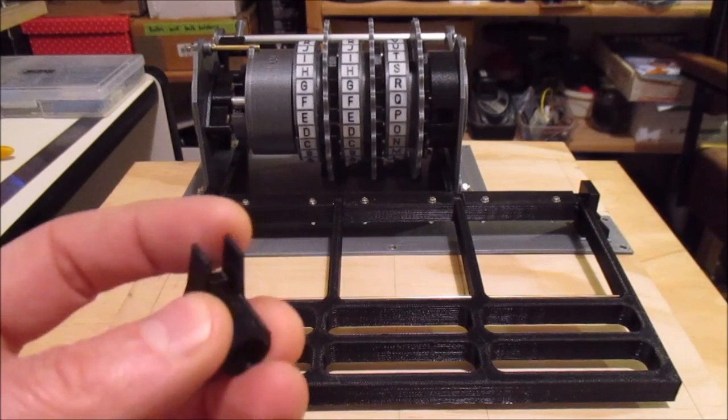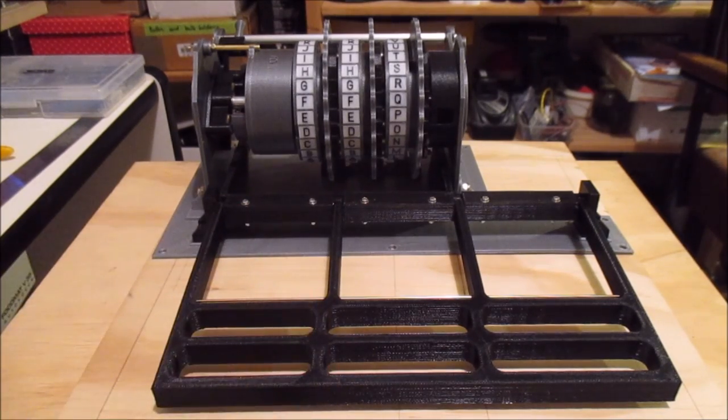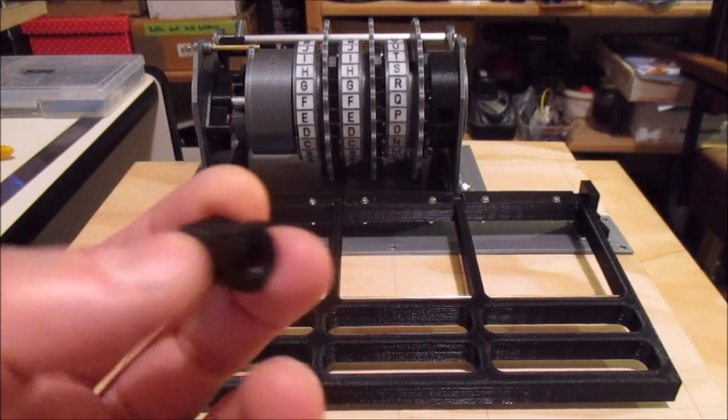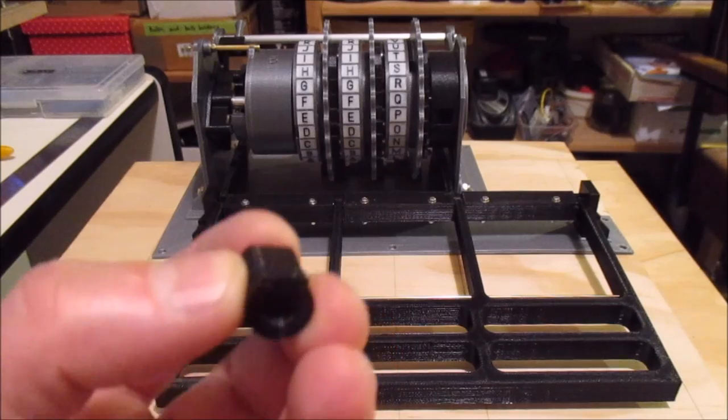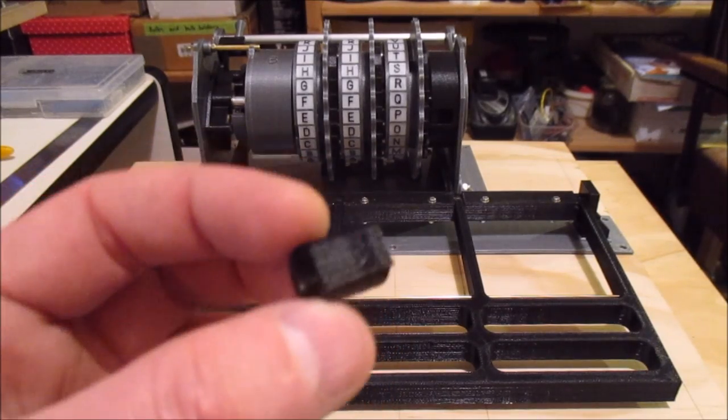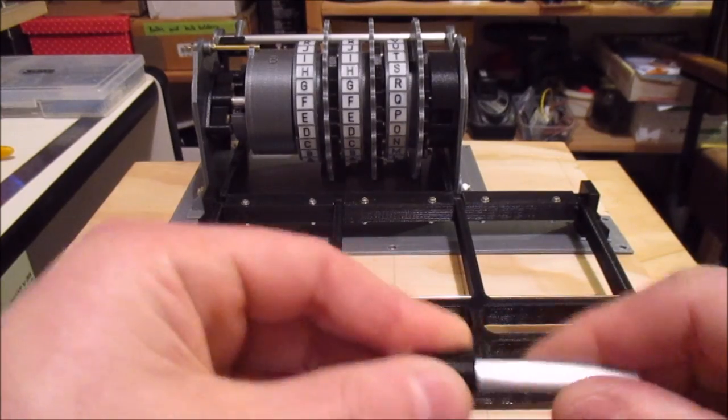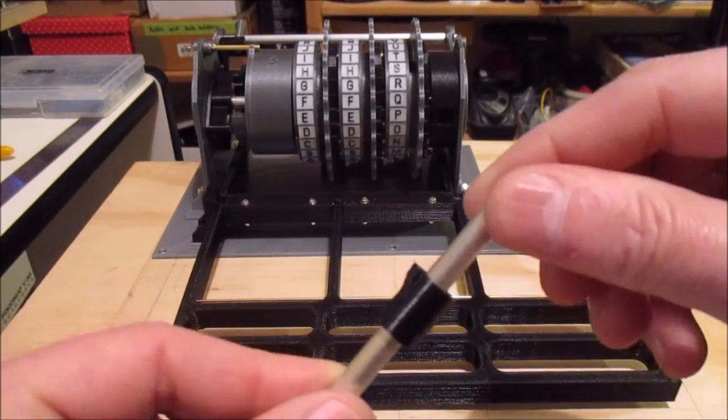Then I started making cams that are more like this. This is one of my earlier test pieces. You can see it's circular with a flat on it and the flat has a little bump and that's the cam part. So that presses through the shaft of the key.